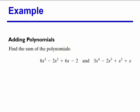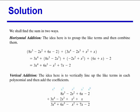Next, we're going to add and subtract polynomials. For adding, we find the sum of the polynomials: 8x to the third minus 2x squared plus 6x minus 2, and 3x to the fourth minus 2x to the third plus x squared plus x. We can do this two ways — horizontal or vertical addition. What we're really doing is combining like terms. 3x to the fourth has no other like term, so it stays. 8x cubed and negative 2x cubed combine to give 6x cubed. Negative 2x squared and x squared combine to give negative x squared. 6x and x give 7x, and negative 2 is the constant. The final answer is 3x to the fourth plus 6x to the third minus x squared plus 7x minus 2.